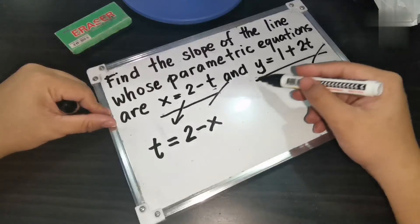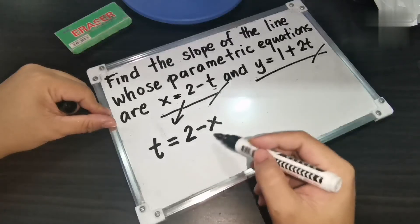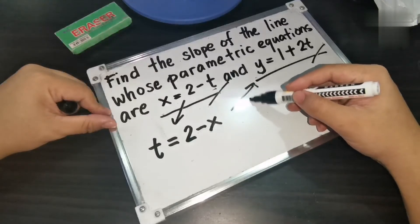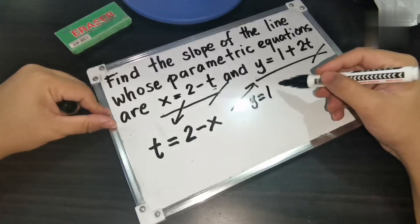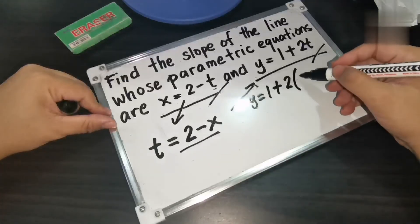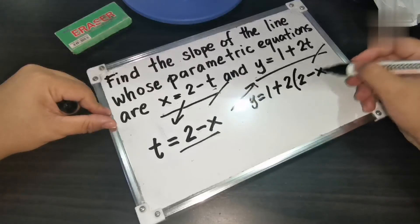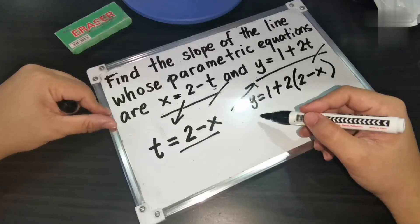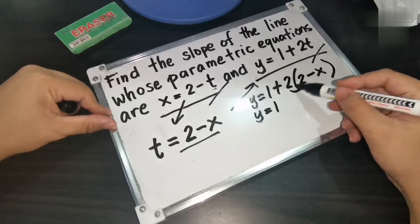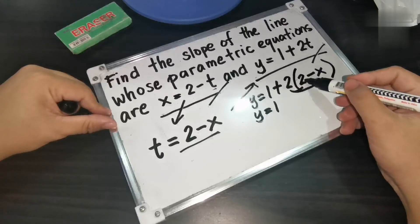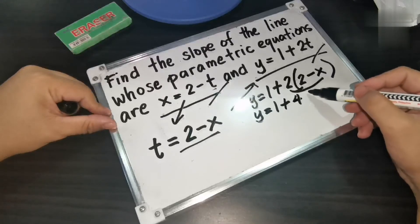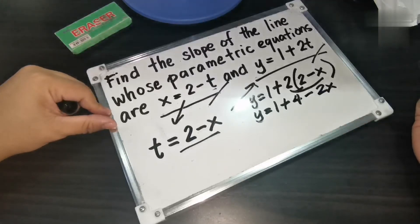By using your second equation, we can substitute this t in terms of x. So the equation becomes y is equal to 1 plus 2 multiplied by the value of t, which is 2 minus x. To simplify, we copy y is equal to 1, then distribute the 2 to 2 minus x: 2 multiplied by 2 gives positive 4, and 2 multiplied by negative x gives negative 2x.